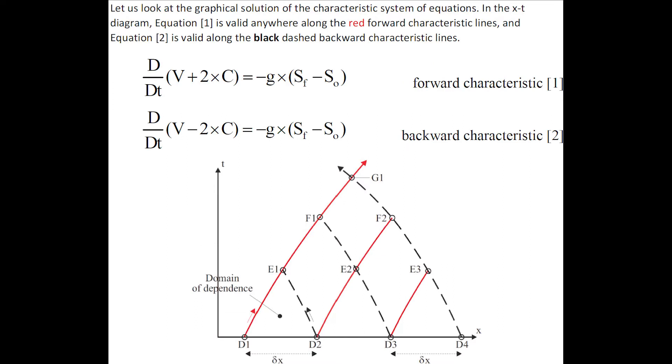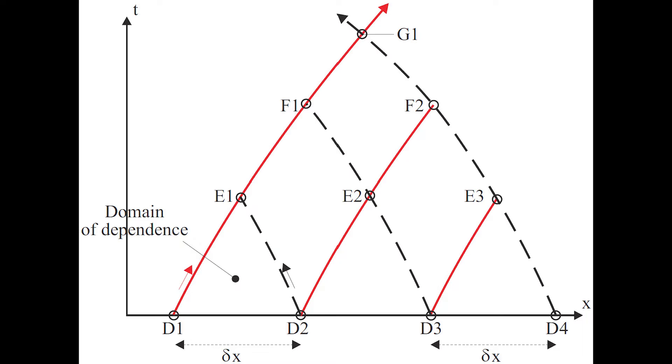Let us look at the graphical solution of the characteristic system of equations. In the x-t diagram, the first equation is valid everywhere along the red forward characteristic lines, and equation two is also valid along the black dashed backward characteristic lines.